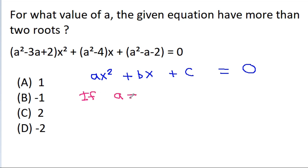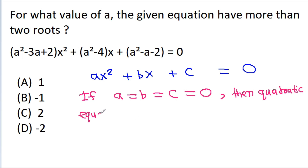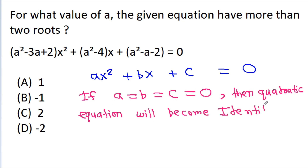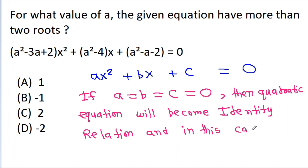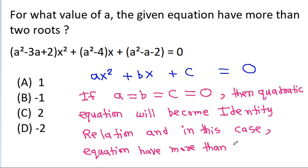But if a is equal to b is equal to c is equal to 0, then in this case the quadratic equation will become an identity relation. And in this case, the equation has more than two roots — or we can say infinite roots.